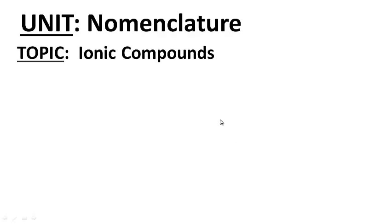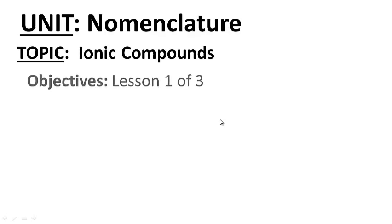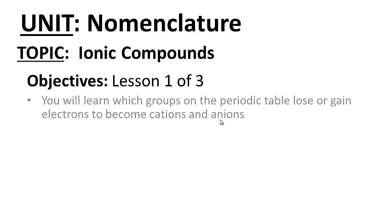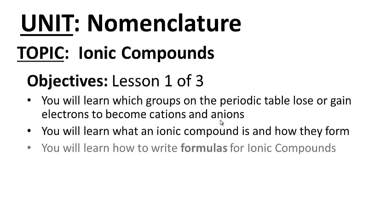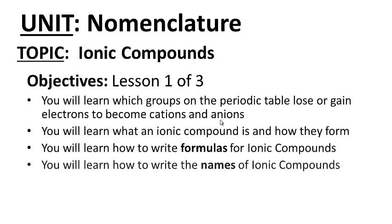Welcome to our unit on nomenclature. Today's topic is ionic compounds, lesson one of three. Your objectives are as follows: you will learn which groups on the periodic table lose or gain electrons to become cations and anions, you will learn what an ionic compound is and how they form, you will learn how to write formulas for ionic compounds, and you will learn how to write the names of ionic compounds. Feel free to pause this video anytime you feel necessary.